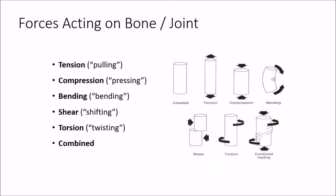First, just a quick review. The different types of forces acting on bone and joint include tension, compression, bending, shear, torsion, and then a combination of all five of these.